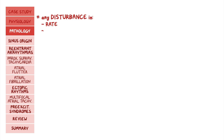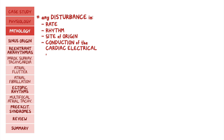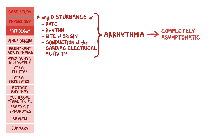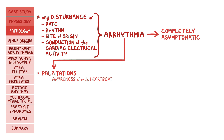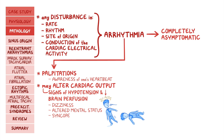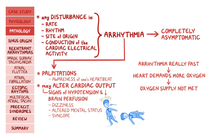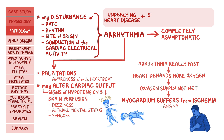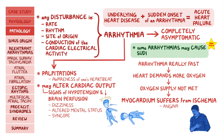Any disturbance in the rate, rhythm, site of origin, or conduction of the cardiac electrical activity is called an arrhythmia. Arrhythmias can be completely asymptomatic and picked up incidentally on an ECG. They can also present with palpitations, which is an awareness of one's heartbeat. Additionally, they may alter cardiac output, causing individuals to present with signs of hypotension and decreased brain perfusion, like dizziness, altered mental status, or syncope. If an arrhythmia is really fast, the heart demands more oxygen, and if oxygen supply is not met, the myocardium suffers from ischemia, which presents as angina. In people with underlying heart disease, the sudden onset of an arrhythmia can precipitate acute heart failure. Finally, some arrhythmias may even cause sudden cardiac death.